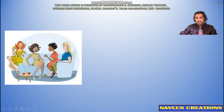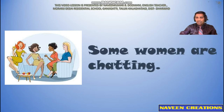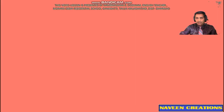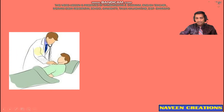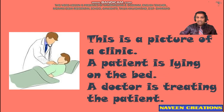In this picture we can find a woman, and we can describe it like: some women are chatting. In the next picture we can find a patient and a doctor. After observing this picture we can make simple sentences: this is a picture of a clinic. A patient is lying on the bed. A doctor is treating the patient.